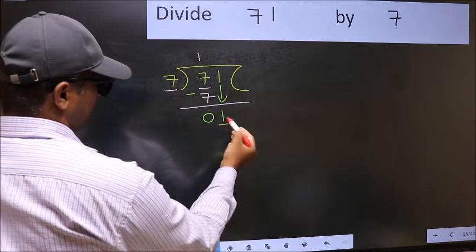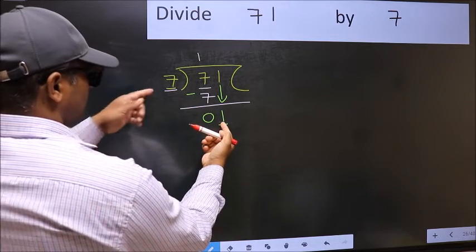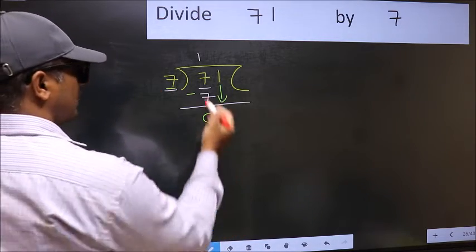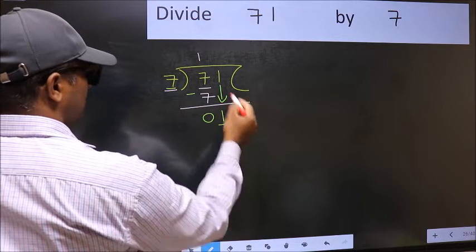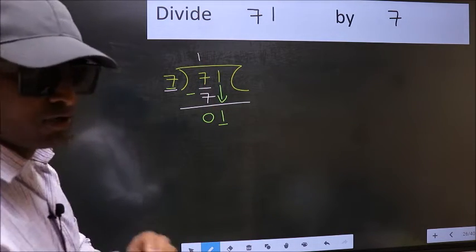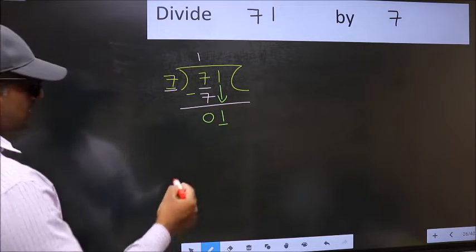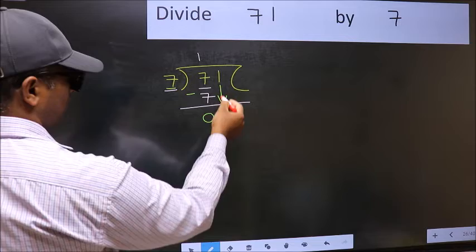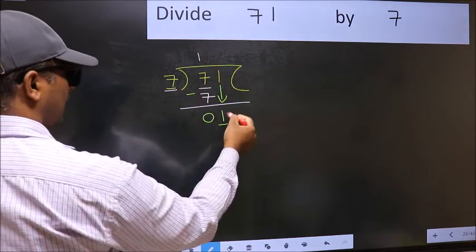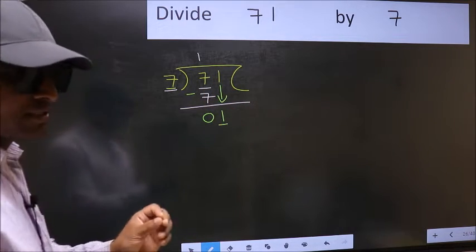Here we have 1, and here 7. 1 is smaller than 7. So what many do is they directly put dot and take 0, which is wrong. Why is it wrong? Because just now you brought this number down, and in the same step, you want to put dot and take 0, which is wrong.